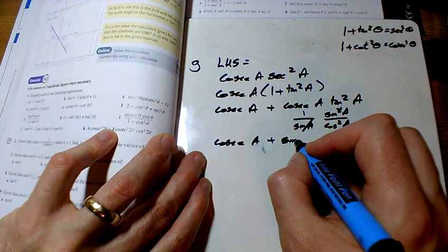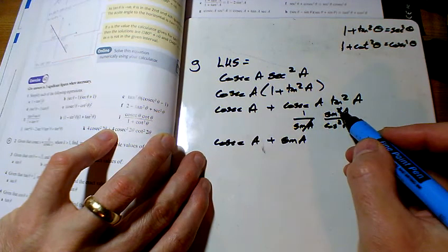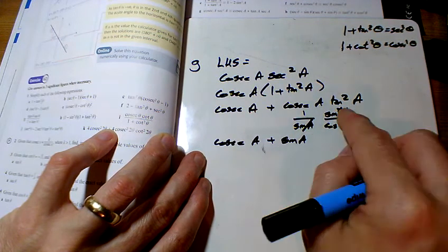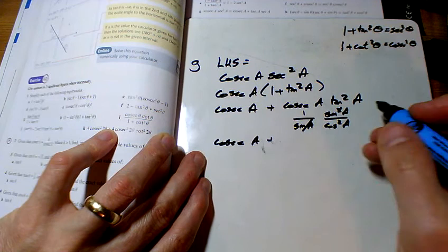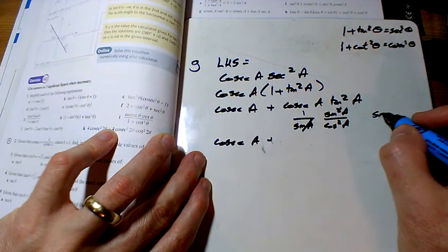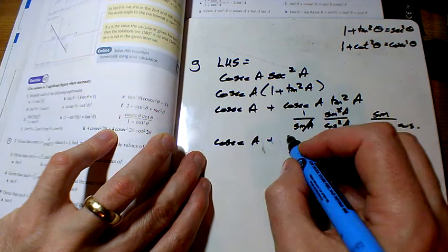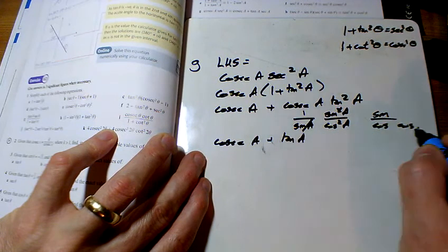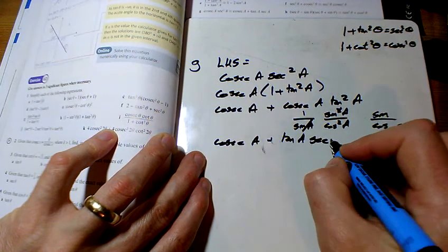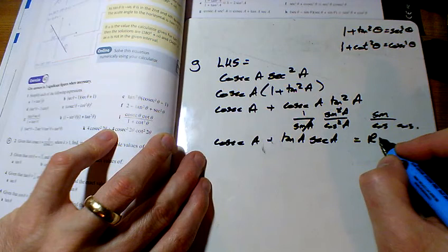I've got a sine a, and a cos, so one sine and two coses, sine over cos and another cos on the bottom. So sine over cos is the tan, and the cos on the bottom is the sec. There you go, that equals the right-hand side.